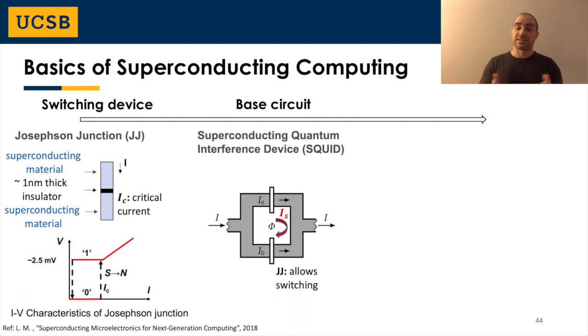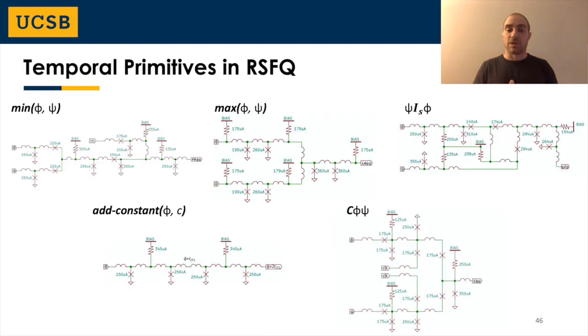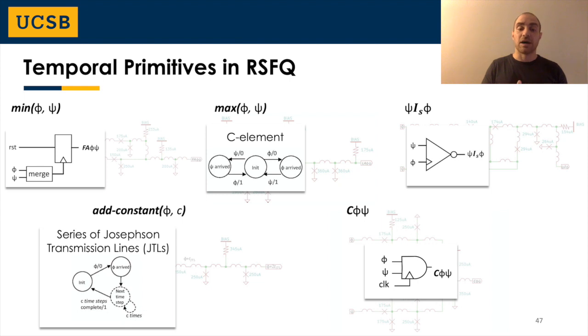The SQUID generally has multiple applications. But in the case of computing, it is frequently thought as a basic memory cell and is heavily used for the construction of stateful gates. Now, we use Josephson junctions and SQUIDs for the construction of our race logic operators in RSFQ. We will not go through the details of all these analog implementations here, but rather, we will focus on a higher level of abstraction that will still give us a good idea about the realization in superconducting.